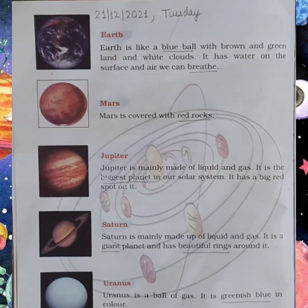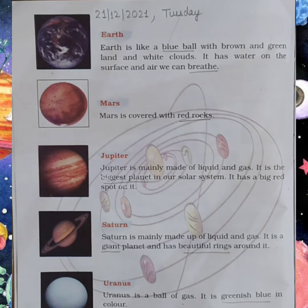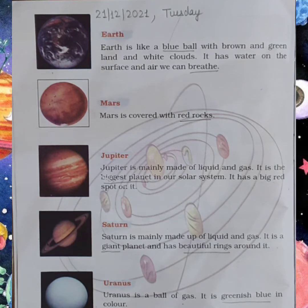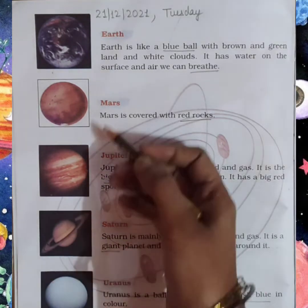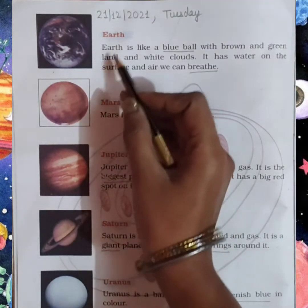Now turn your page and open page number 98. First of all, write down the date and day. Today is 21 December 2021 and the day is Tuesday — mention Tuesday here. Now coming to the third planet, which is Earth.